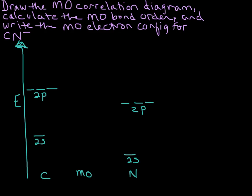Now we need to think about something, because we always need to choose the order of the correlation diagram before we draw it. Because carbon and nitrogen both use a second order diagram, this heteronuclear diatomic molecule is also going to use a second order diagram. That means our pi MO's are going to be lower in energy than the sigma pz — that's why we need that information. Since they both agree, we know it uses a second order diagram.